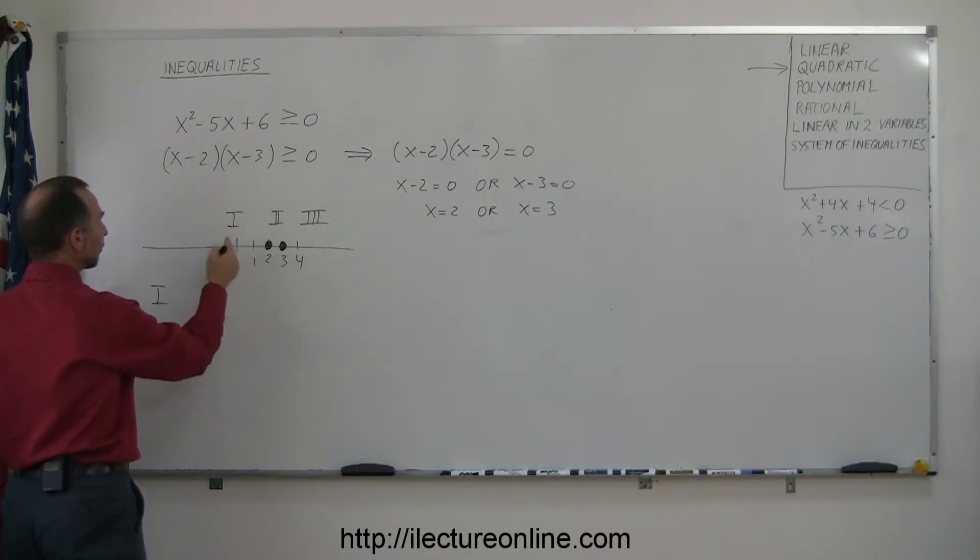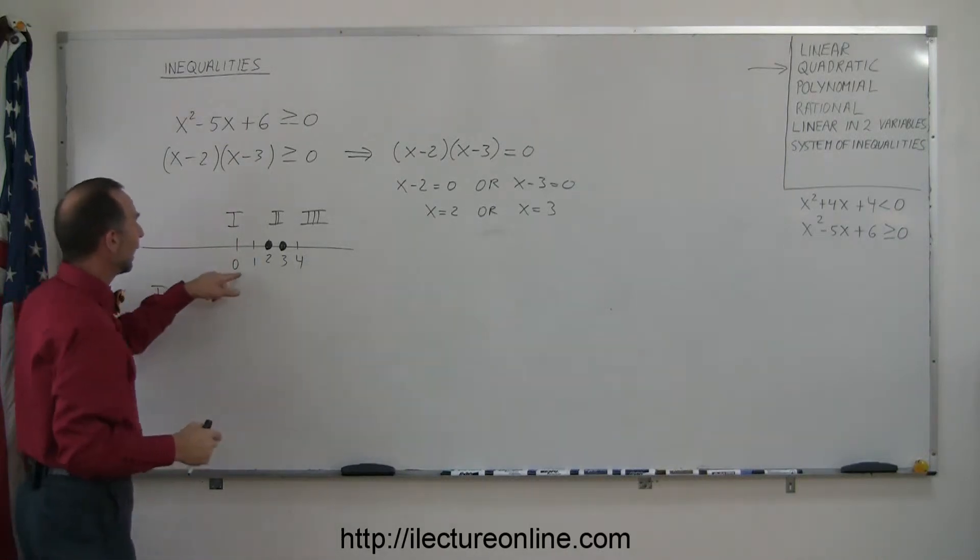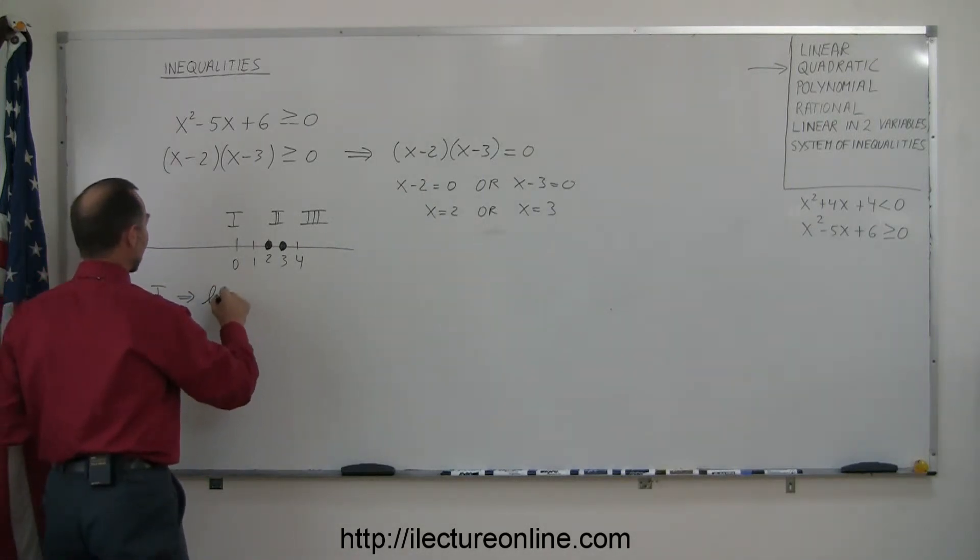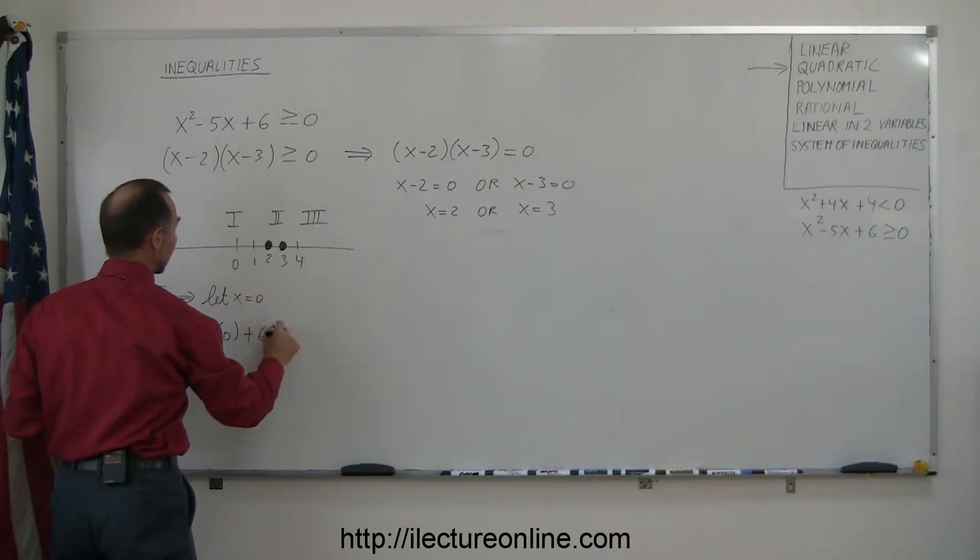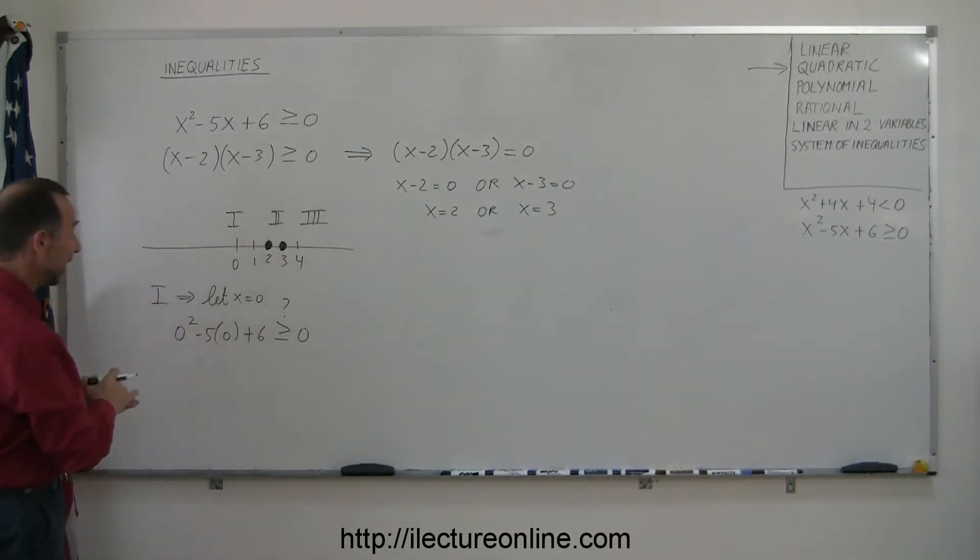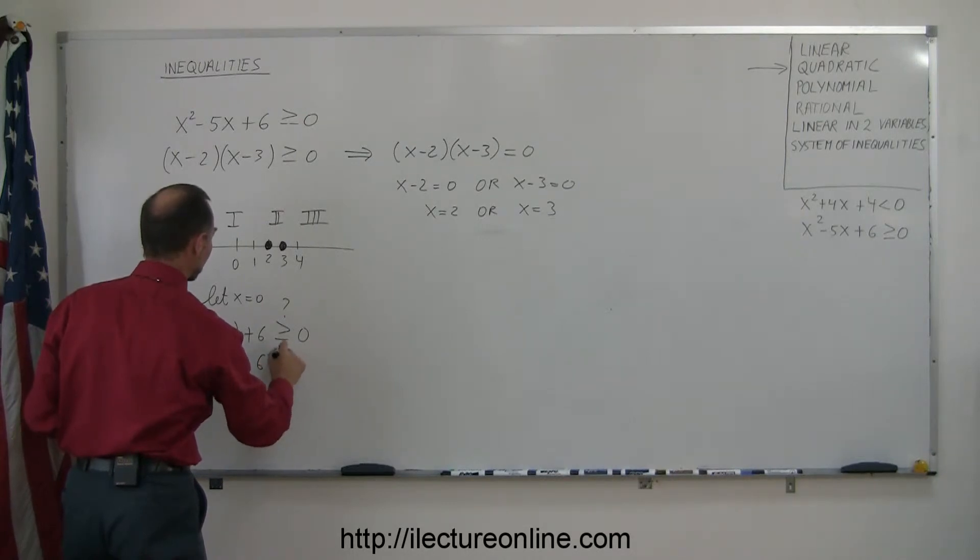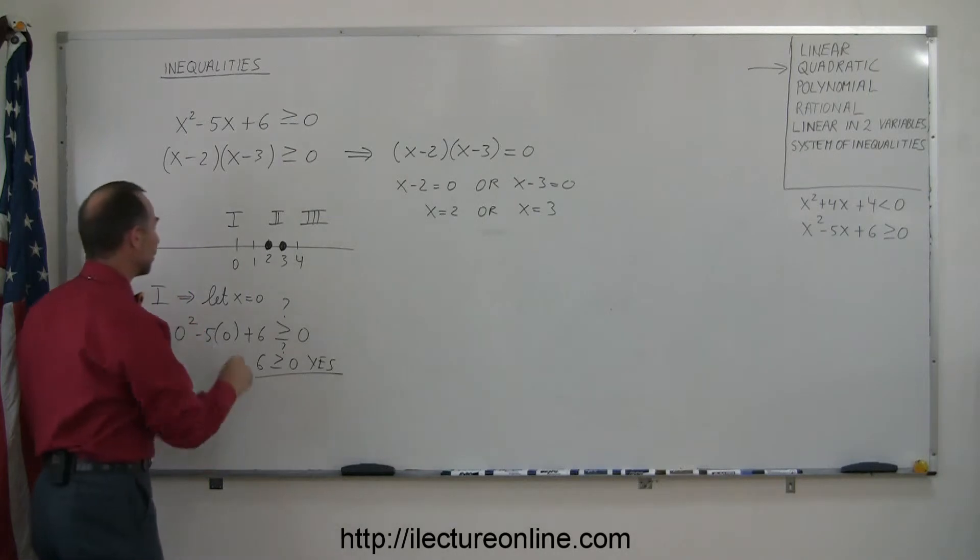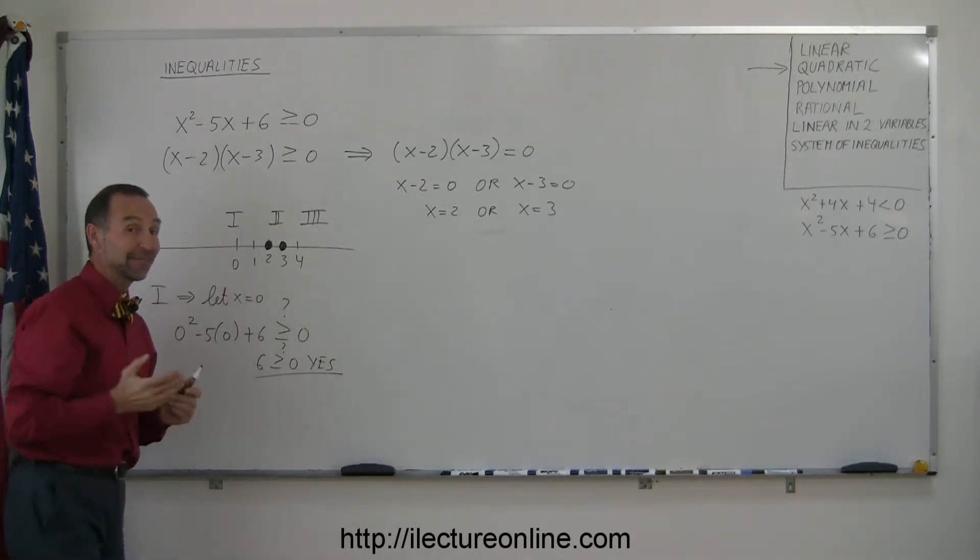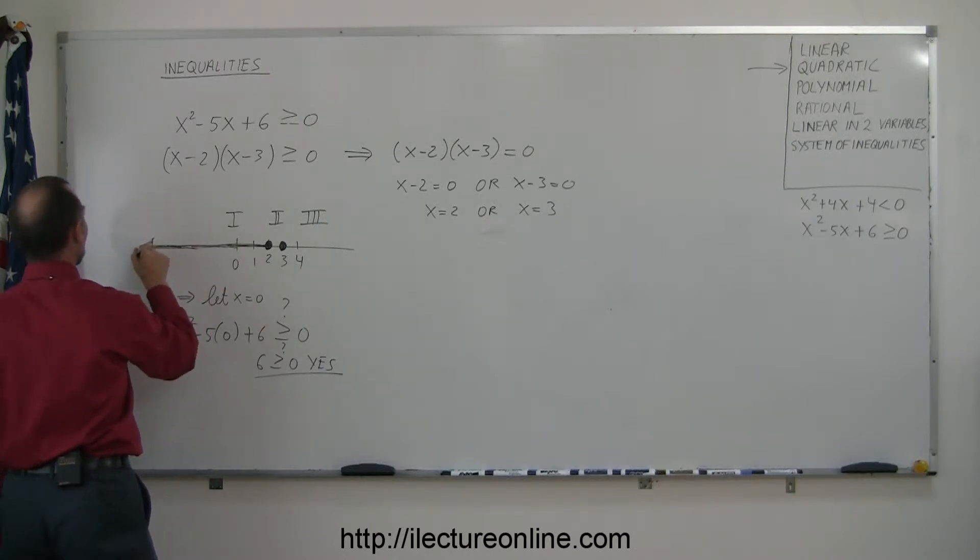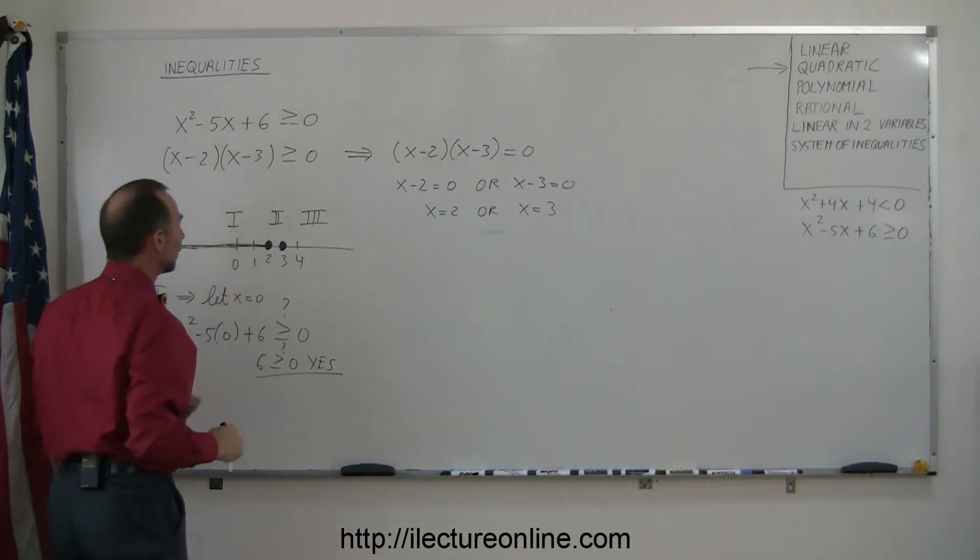So for region number 1, which is to the left of the number 2, we're going to plug in a test point into our inequality like 0 or 1. If you plug in number 0, that's always the best point to pick. Let x equal 0, and let's plug that into the inequality. We get 0² - 5(0) + 6 ≥ 0. And of course, that's a question mark. We want to test that, verify that that is a true statement. If it is, we pick the point and region that satisfies the inequality. It will be part of the solution. So 0 - 0 is 0. So we get 6 > 0, question mark, and the answer is yes. Which means that the number 0 lies in the region, region number 1, that satisfies the inequality. So we can go ahead and indicate that by drawing the solid line here with an arrow saying anything or any value to the left of 2 will satisfy this inequality.